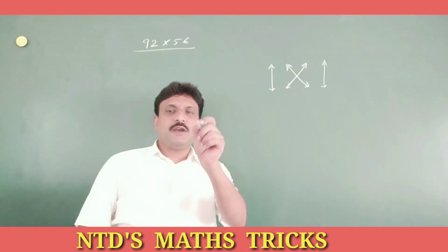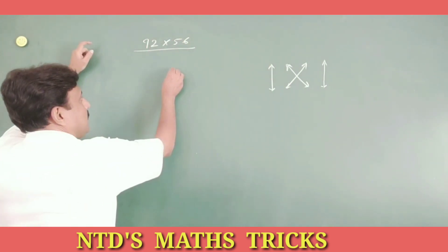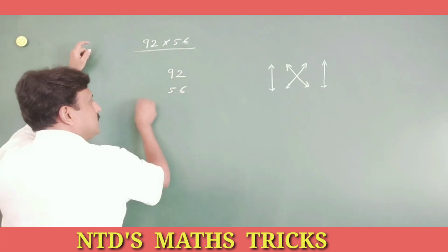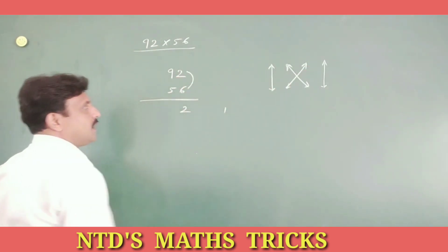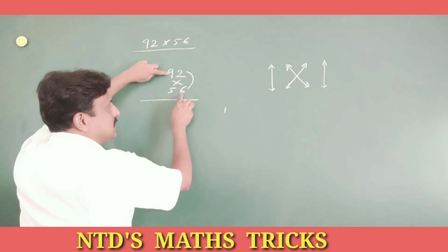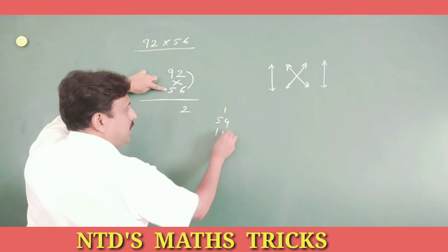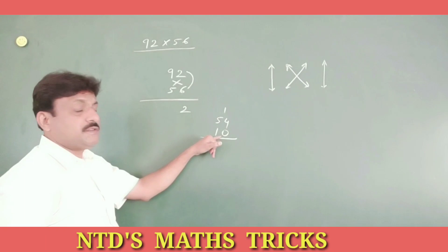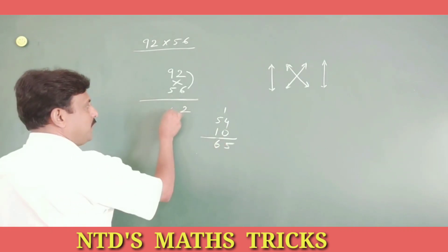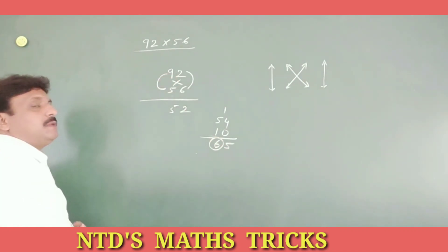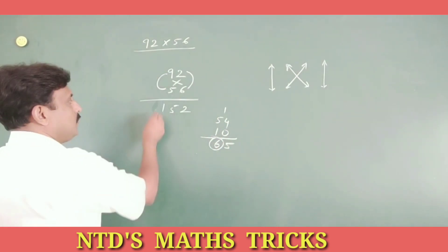Let us take a huge number, a difficult number. 92 into 56, use this magical trick. Multiply unit place number, 6, 2s are 12, 1 carry. Cross multiplication, 9, 6s are 54, 5, 2s are 10. Then add this carry, 54 plus 10, 64 plus 1, 65. Write 5, 6 carry. Multiplication, 10 plus 5, 9s are 45, 45 plus 6 are 51.